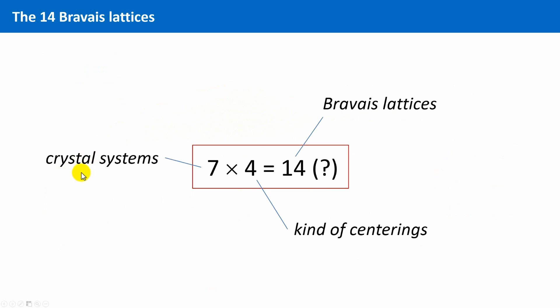If we have seven crystal systems and four kinds of centerings, then the total number of different cells, including centerings, should be 28, and not only 14. So, what is the reason for that?